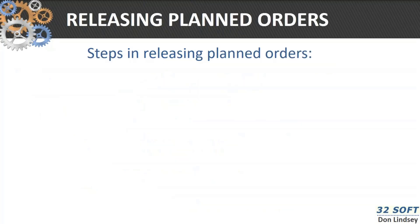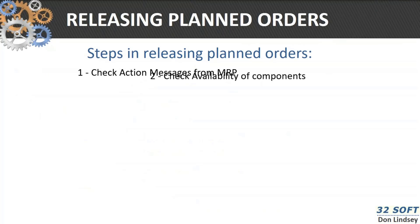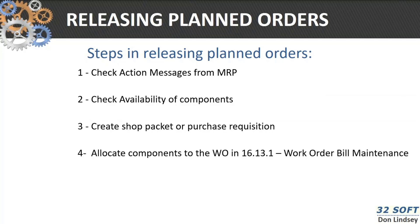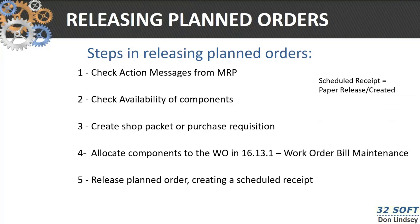The steps in releasing the order are: first of all, check your action messages from MRP. Then check material availability, create the shop packet or purchase requisition, which is sometimes called the scheduled receipt or paperwork released, allocate components to the work order in 16-13-1, and then release the planned order creating the scheduled receipt.